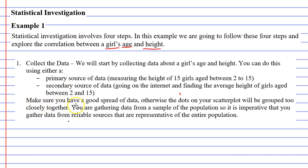Firstly, make sure you have a good spread of data. That means don't just interview a whole heap of people who are 15, 14, and 13, because they're the ages of your friends, and miss out on people aged 2, 3, 4, and so on. Otherwise, the dots on your scatterplot will be grouped too closely together.